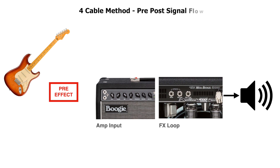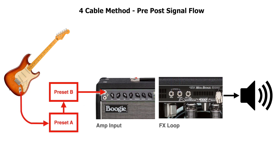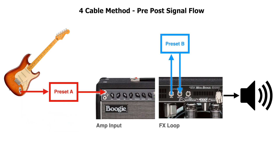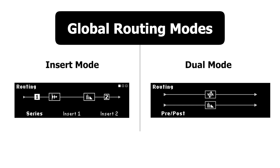Running effects using pre-post routing, also known as the four cable method, gives us the ability to place effects before or after an amp's preamp stage. The H90 makes it possible to have programs with two effects going into the amp with nothing in the effects loop, or one in front and another in the loop, or nothing in front and two in the loop. Connecting to an amp's effects loop in pre-post can be achieved with both insert and dual mode, but each has advantages and disadvantages.